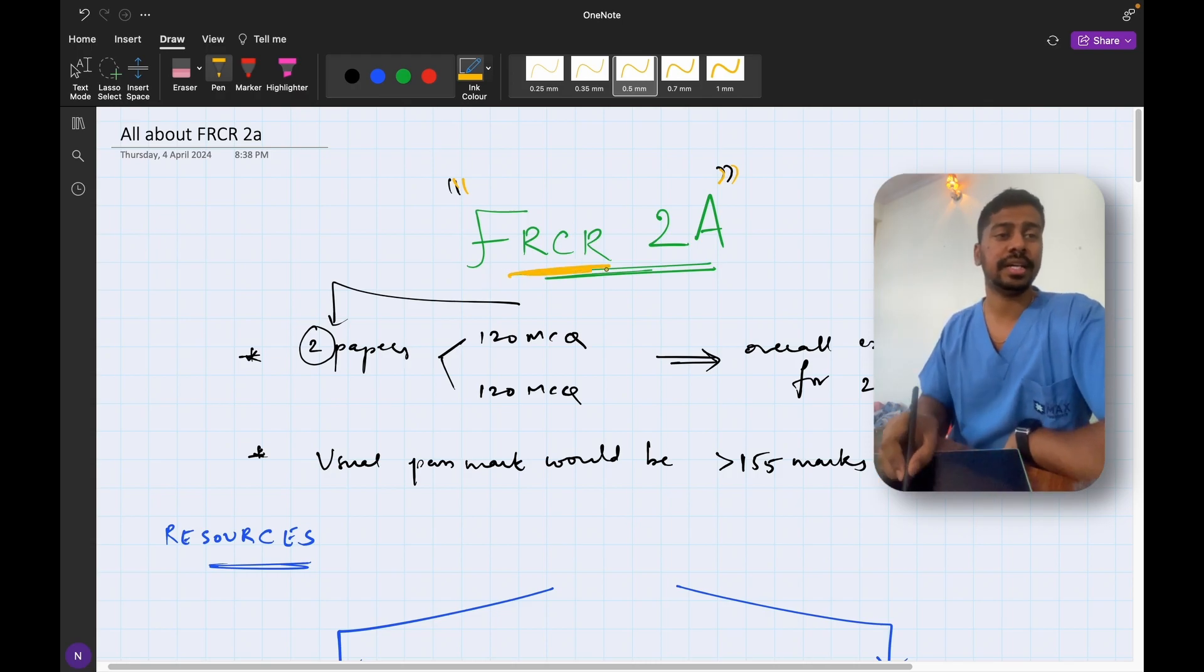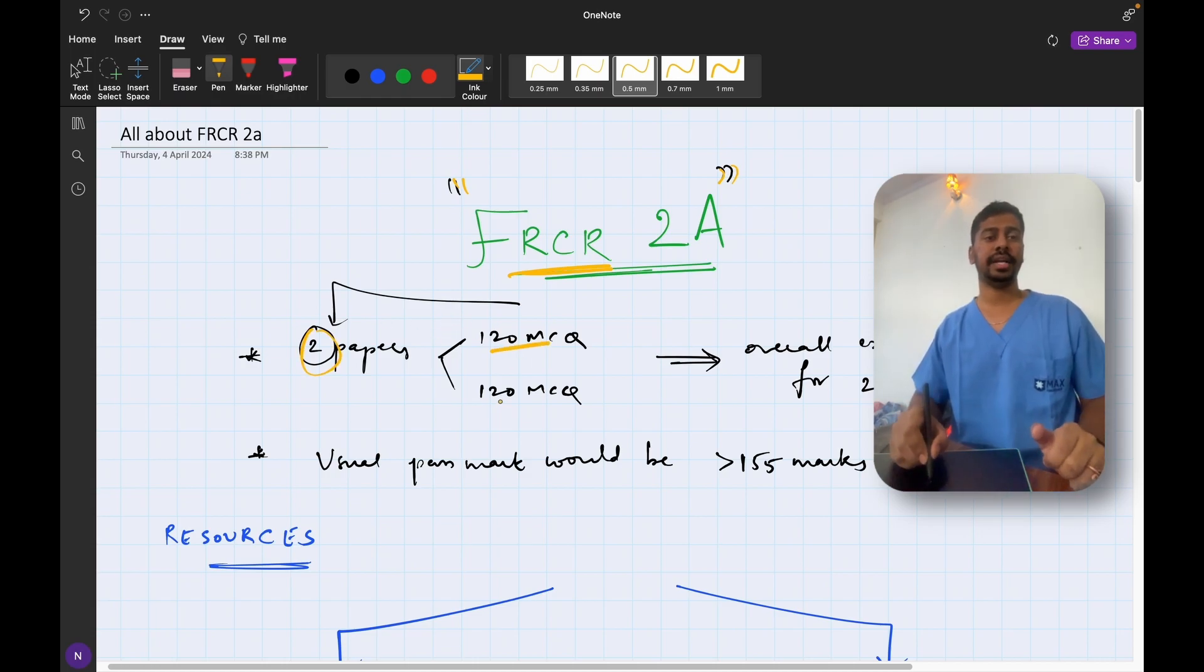So the FRCR 2A exam contains two papers, each with 120 MCQs which are held on two separate days. Each MCQ carries one positive mark and there is no negative marking. So overall the exam is going to be for 240 marks and the minimum amount of marks that you require to pass the exam will usually be in the range of 150 to 160.